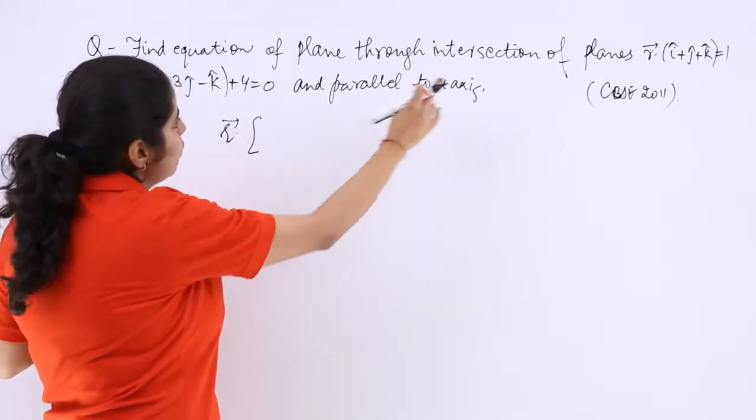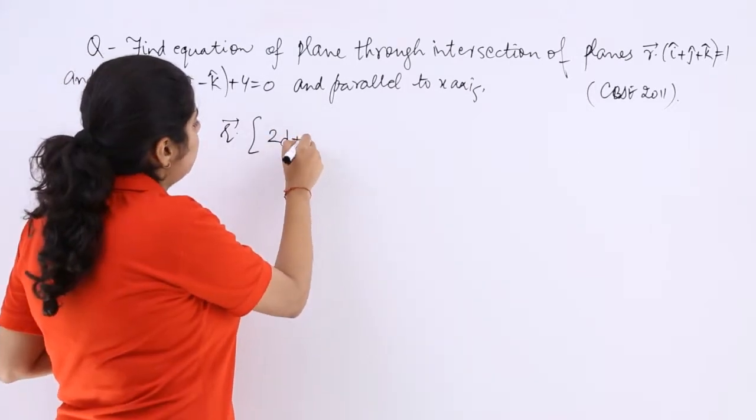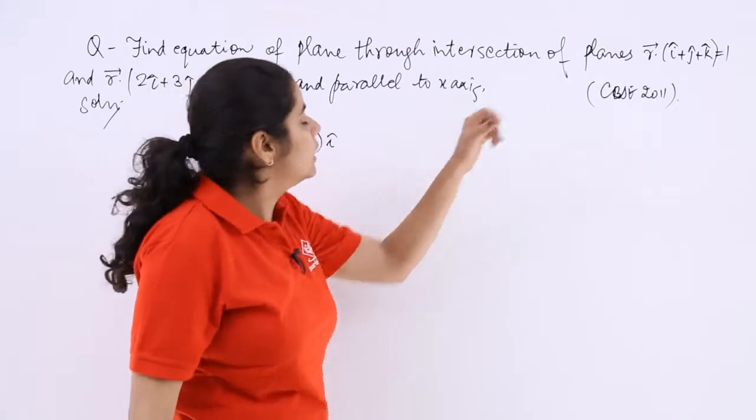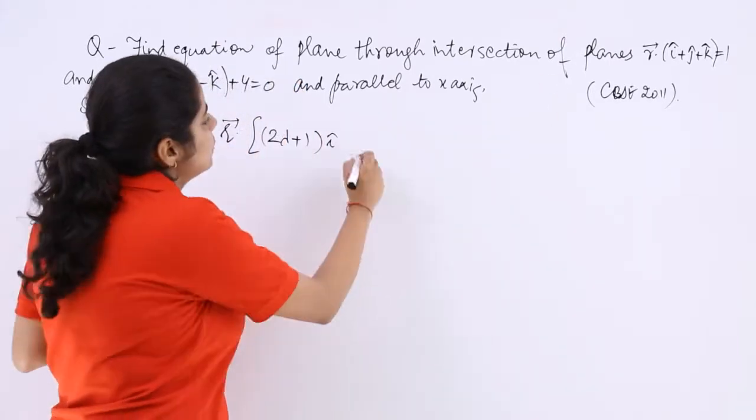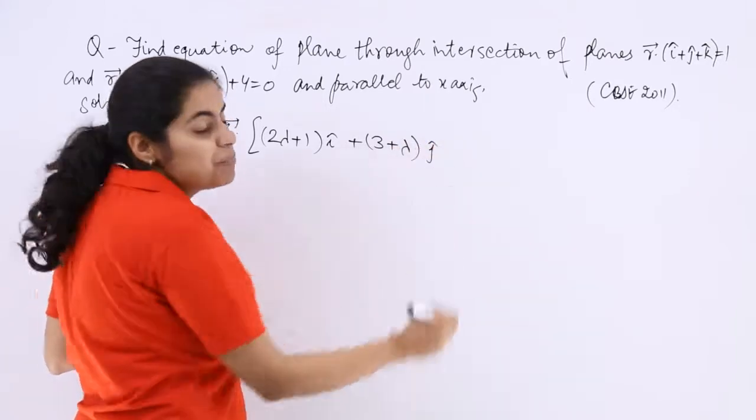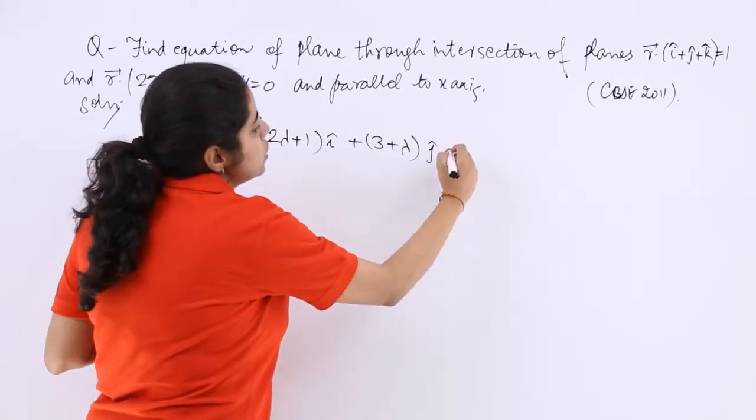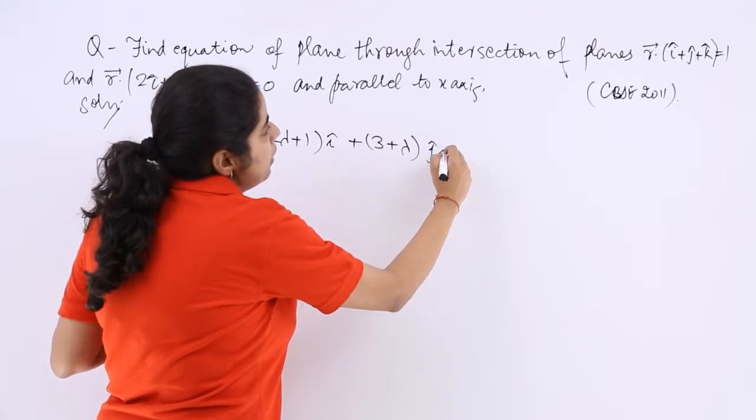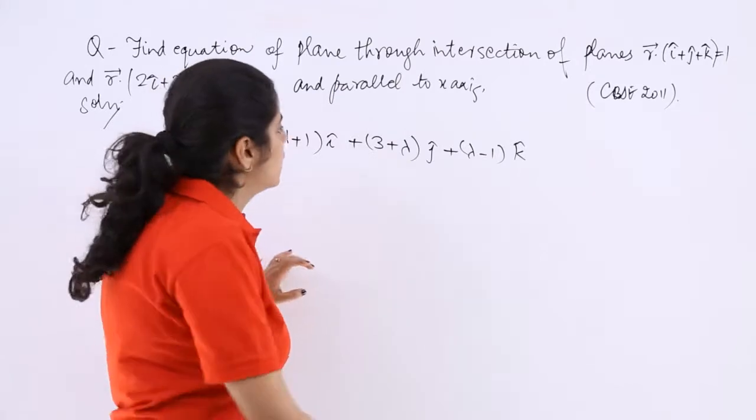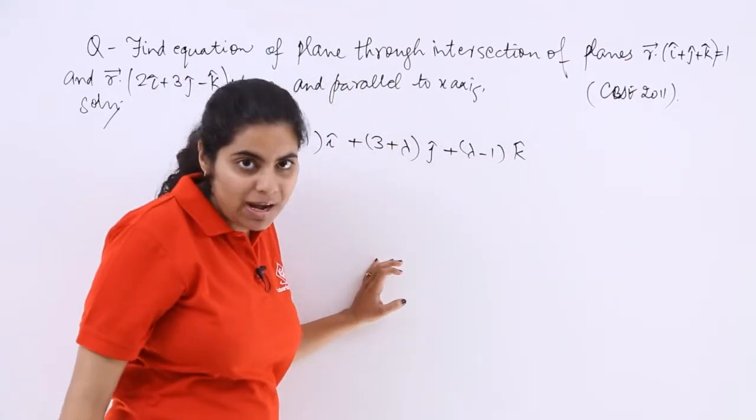Now that will be 1 and here it will be 2 lambda, so 2 lambda plus 1. I'm just skipping one step. Then here it is j and here it is 3, so plus 3 plus lambda j cap. Then there it is k and there it is minus, so you have plus lambda minus 1 k cap.